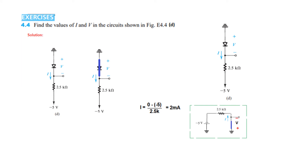If you draw the equivalent circuit: minus 5 and 2.5 resistance, and this terminal is connected to ground. So minus 5 minus V equals ground, or V equals 0. This completes the four parts of exercise 4.4.